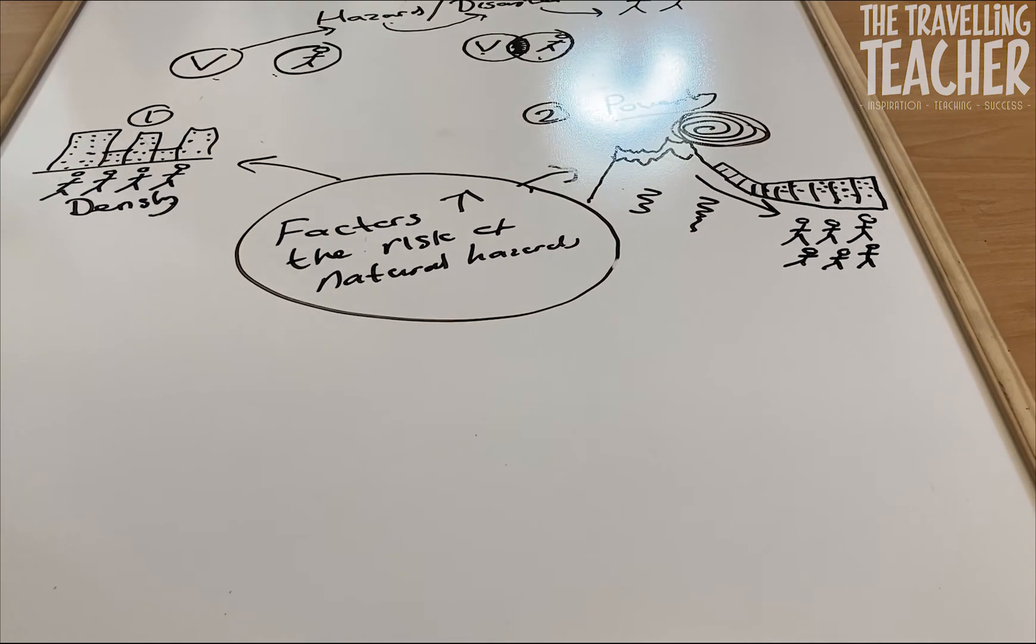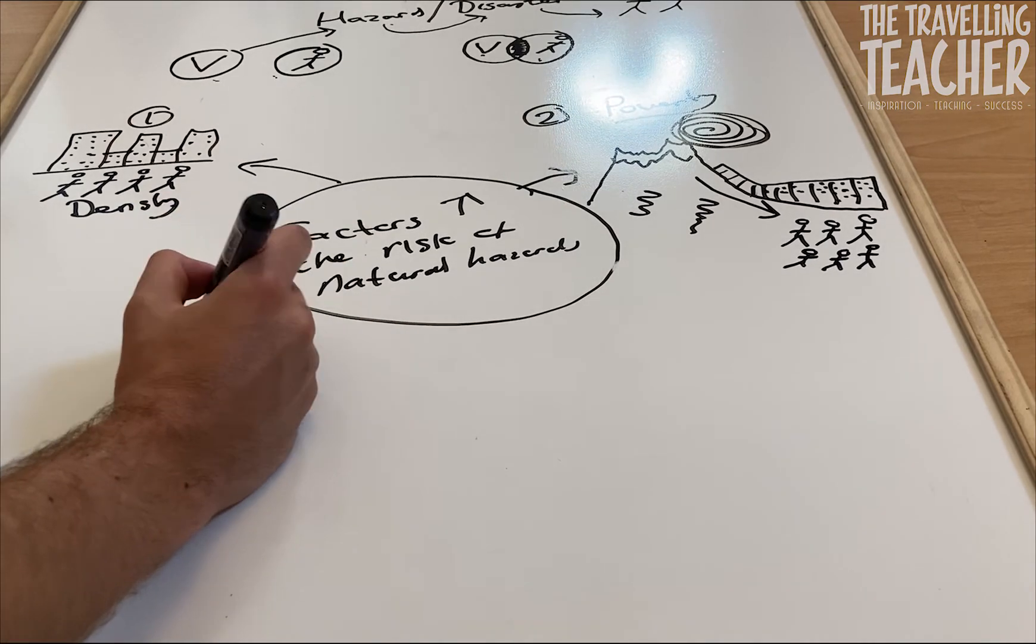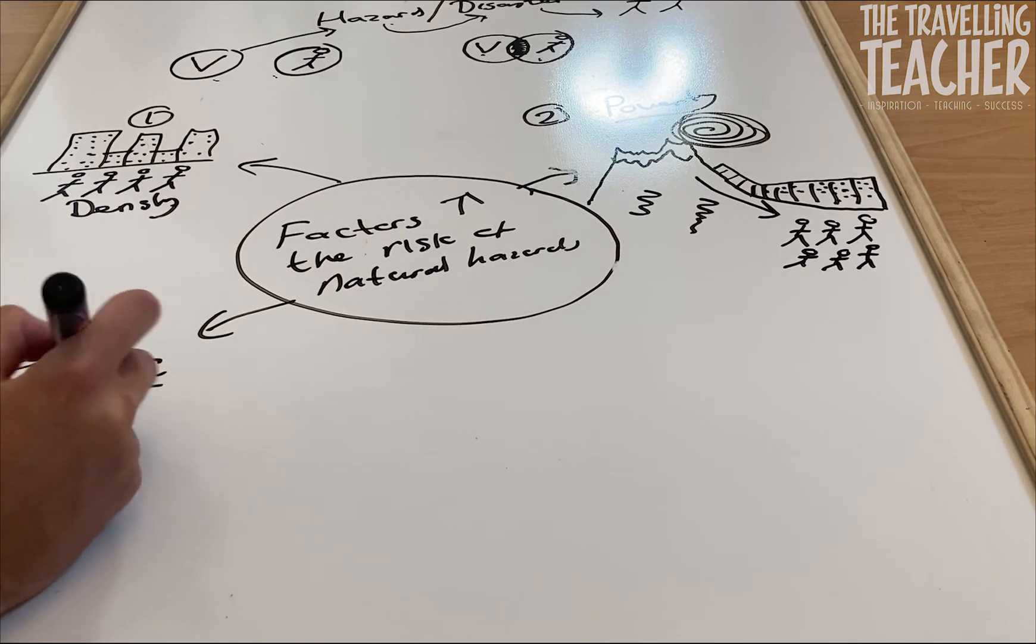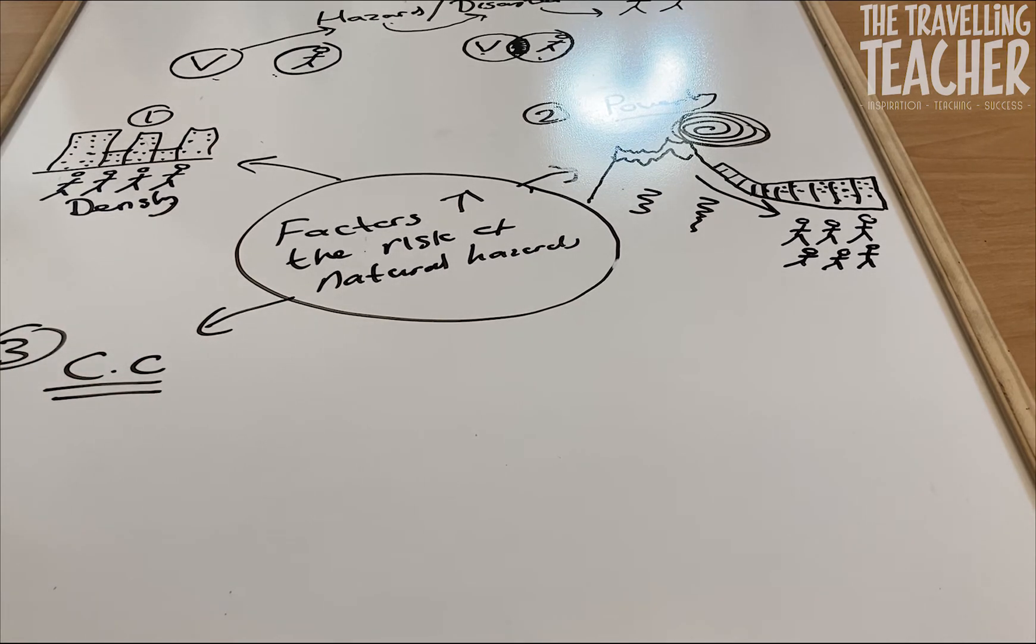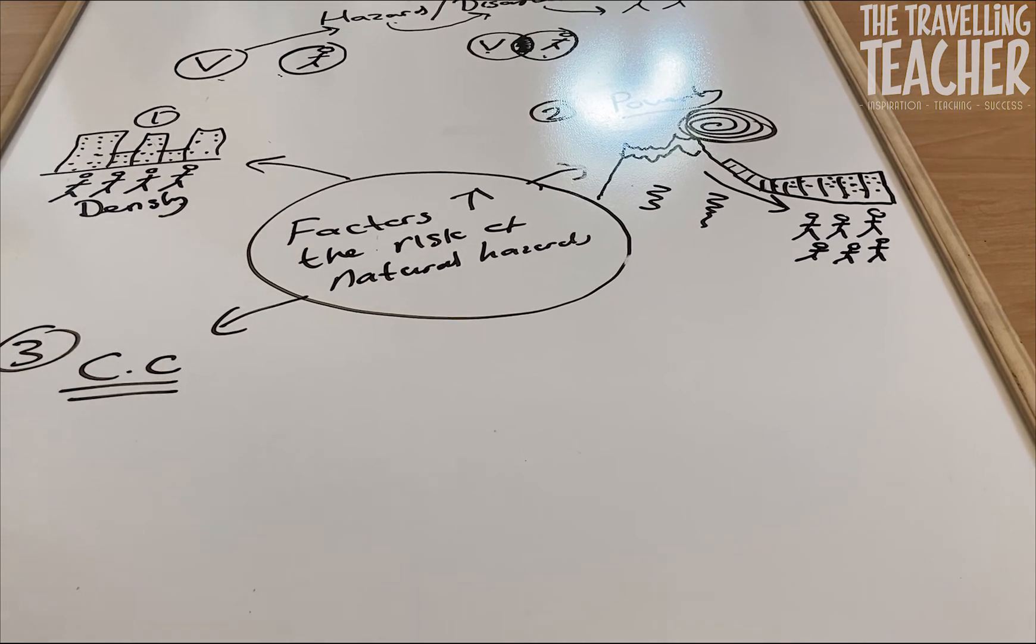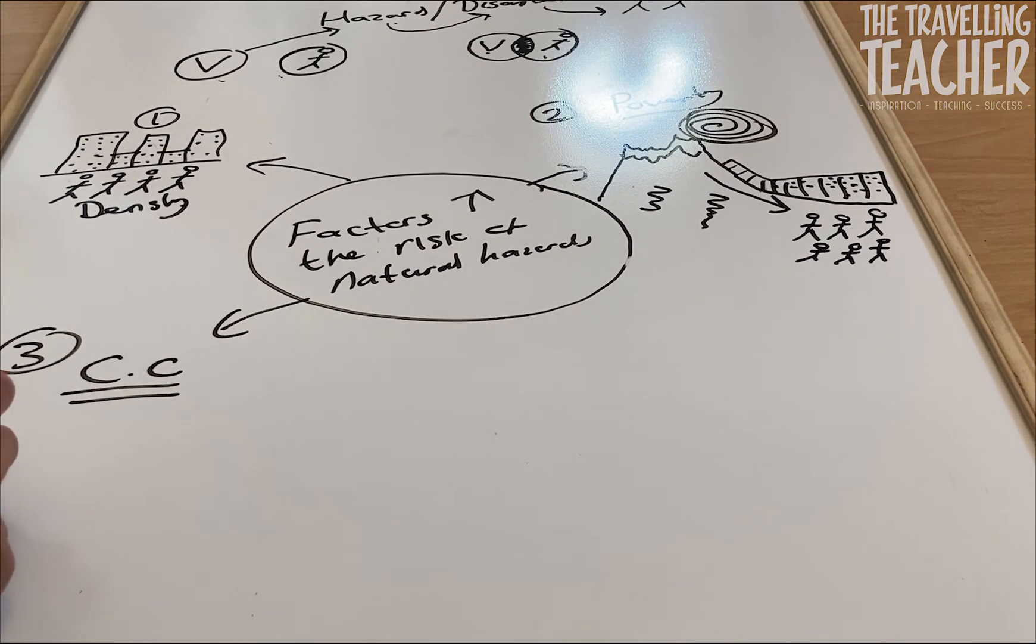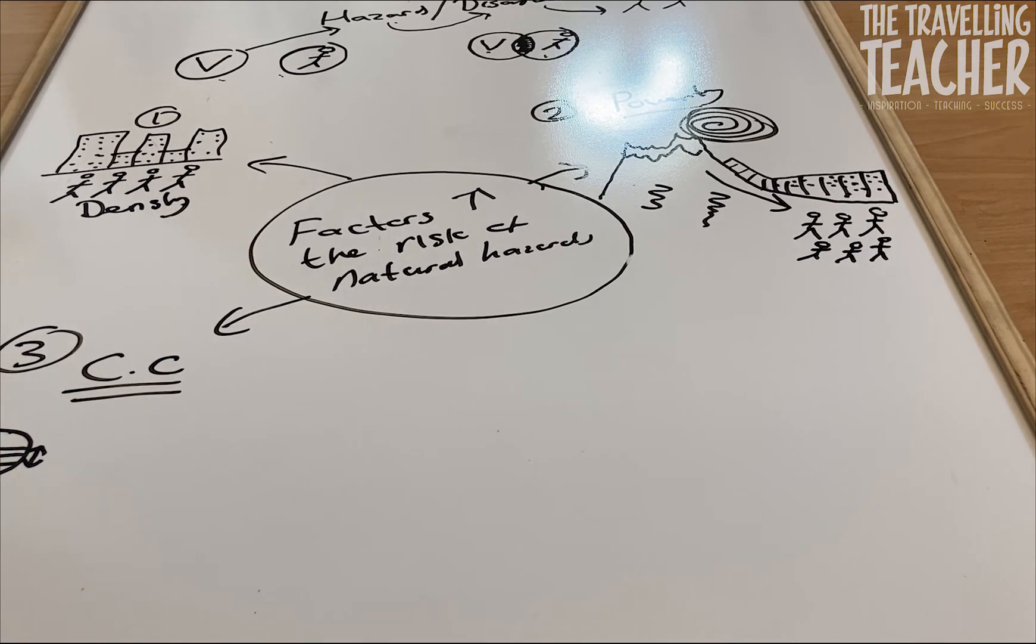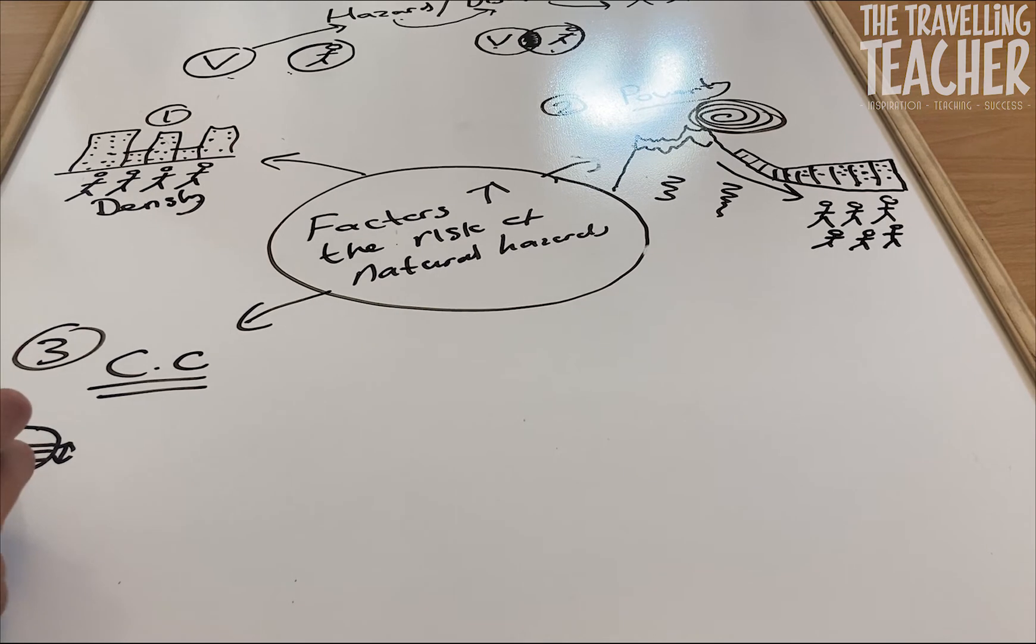Now factor number three is CC, climate change. Now of course as the world is becoming warmer due to climate change, there are some parts of our planet, if I draw the world, between 15 and 5 degrees north and south of the equator, which of course is the location of tropical storms forming.